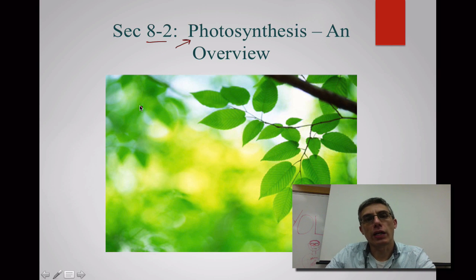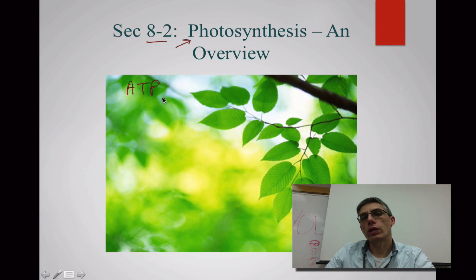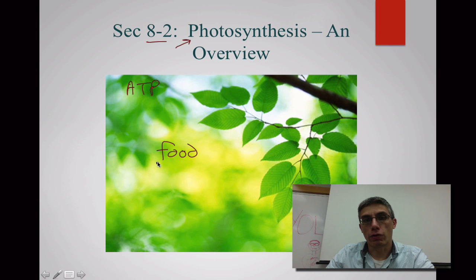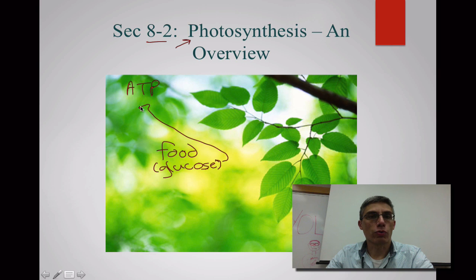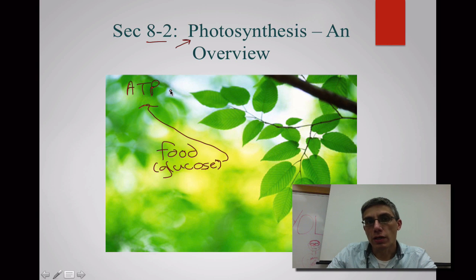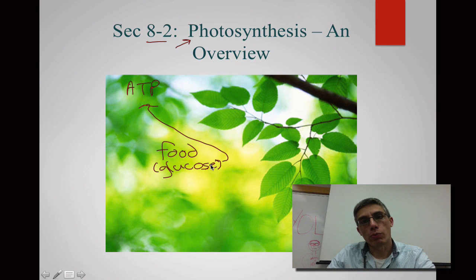If you remember back in 8.1, we had talked about a molecule called ATP. The only way that we can actually produce ATP is by making sure that we take in food. For plants, they need to be able to make their own food, and when they make their own food, they make a molecule called glucose. That glucose is important because it's going to provide energy within its bonds that will be used to create ATP — the chemical form of energy that cells can use to carry out specific life processes. So in 8.2, we're going to look at photosynthesis and how this glucose is produced.